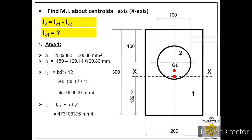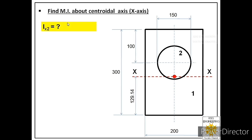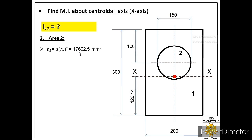Now we calculate IX2. The first step is finding the area of the second regular area, which is circular. A2 = π·R². The diameter of the circle is given as 150 mm, so the radius R = 75 mm. Therefore A2 = π × 75² = 17,662.5 mm².